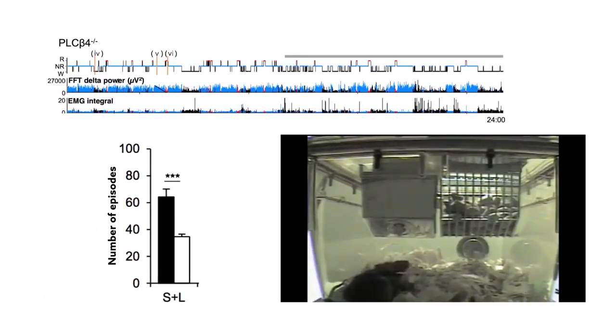Because non-REM sleep always comes before REM, these results show that the loss of this signaling disrupted the transition from non-REM to REM and distorted how much of each sleep type the mice got.